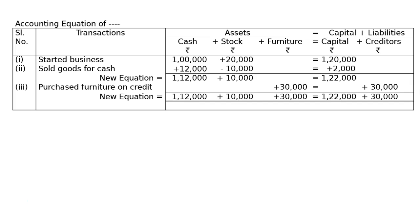The final equation: cash rupees one lakh twelve thousand, stock rupees ten thousand, furniture rupees thirty thousand, capital rupees one lakh twenty two thousand, and creditors rupees thirty thousand.